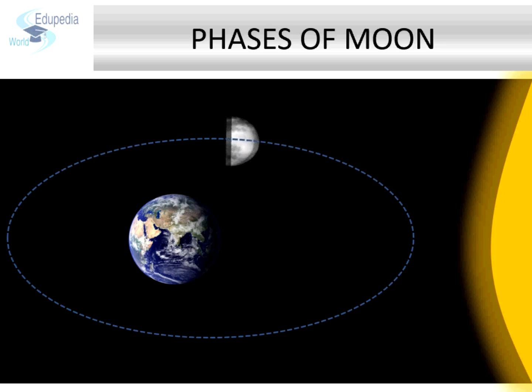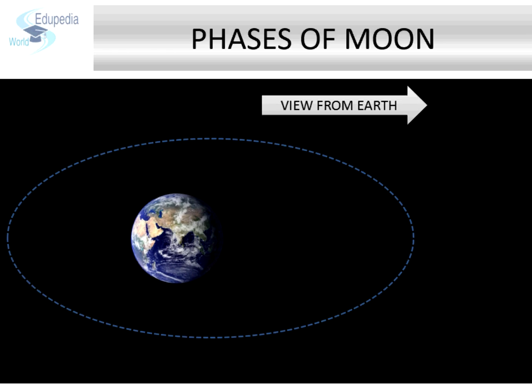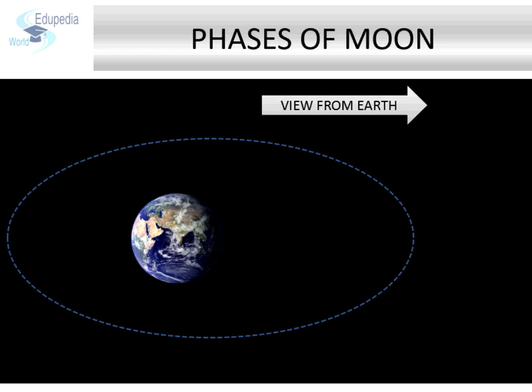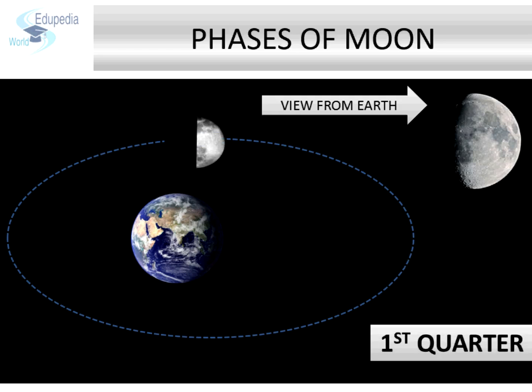These varying shapes of moon are known as phases of moon. When the moon is between the Earth and the sun during its revolution around the Earth, we do not see any portion of the illuminated half of the moon. Therefore the moon becomes invisible. As the moon moves gradually ahead, we begin to see its illuminated half. This is known as waxing of moon — it means that the moon is growing.